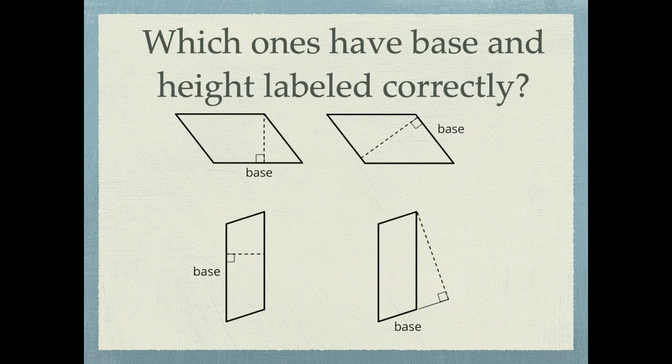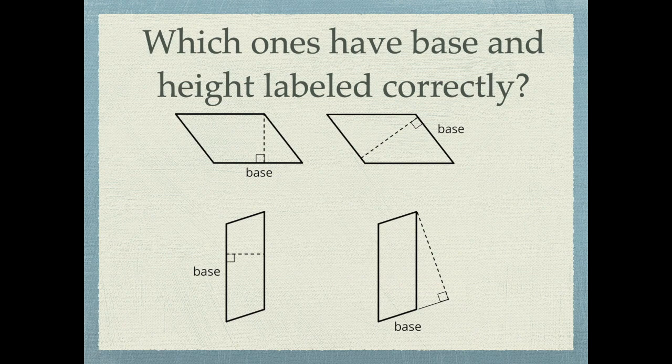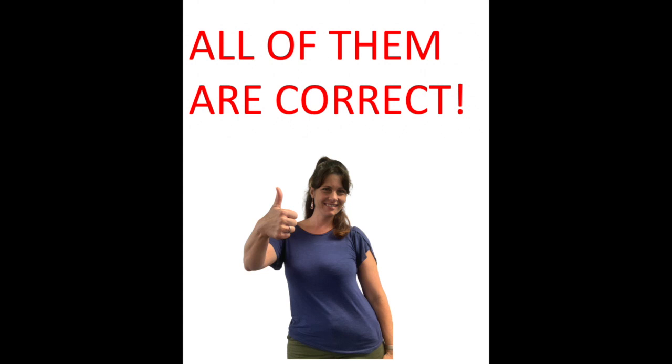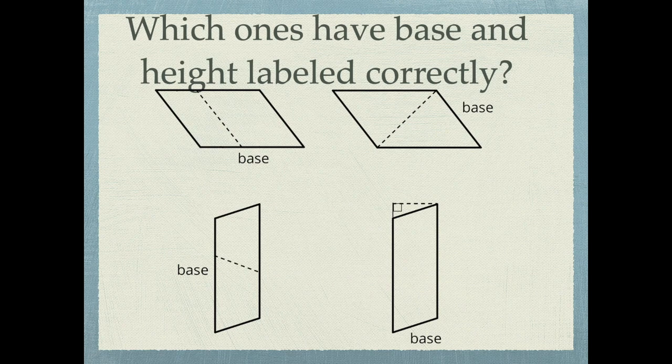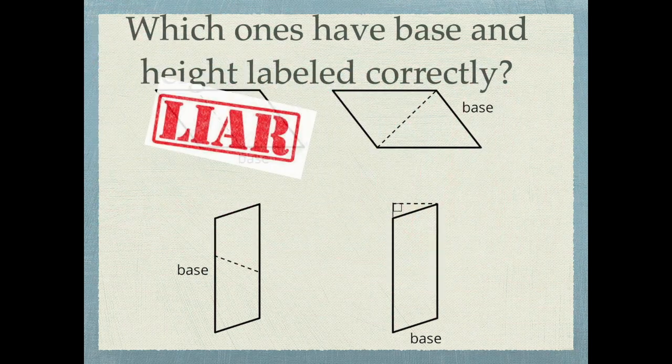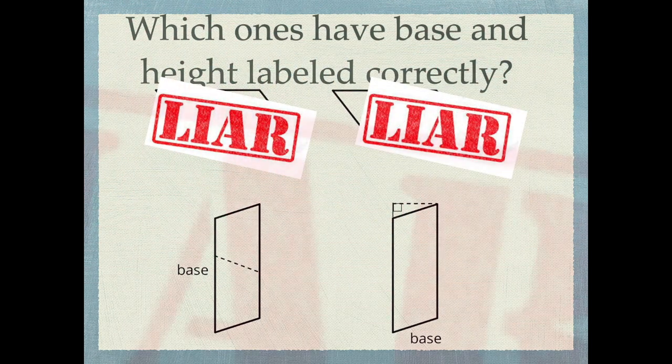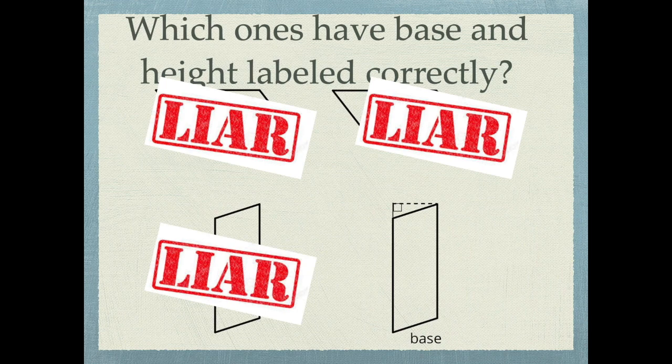So let's talk a second about bases and heights, because a lot of times it's hard because all the sides are labeled and you got to figure out which one is the base. So let's just look at all of these and you tell me which ones have the base and the height correctly labeled. Let's look at this one a little closer because only one of these is correct. Which one of these has the base and the height perpendicular to each other and labeled correctly? Not that one. Not that one. Not that one. Only that one. Ta-da!